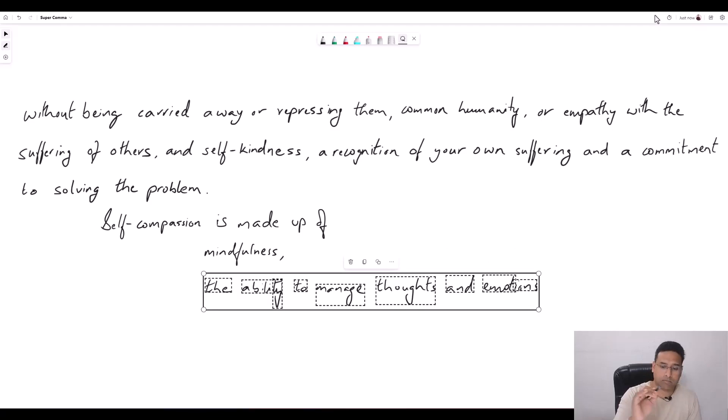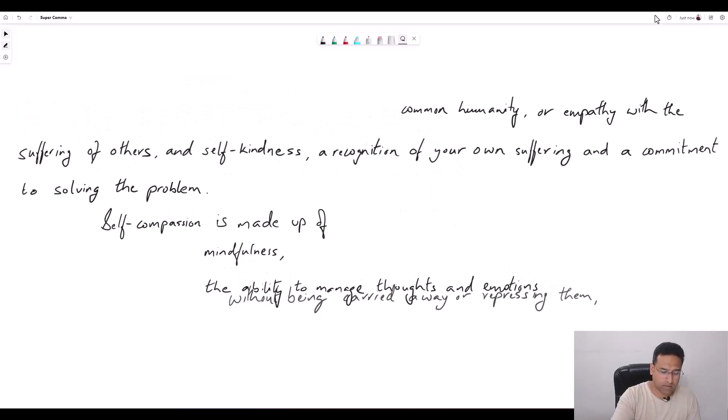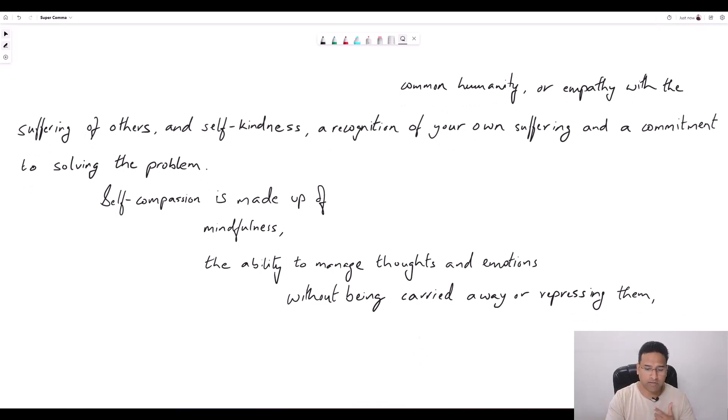Without being carried away or repressing them. Now, without being carried away or repressing them seems to be the modifier of managing thoughts and emotions without being carried away or repressing them. So this is just the continuation of the seemingly second entity. So without being carried away is modifying the ability to manage thoughts and emotions. But the question at hand is, is this entire thing, this ability, the second entity in the list that constitutes self-compassion? You must be asking yourself this question. And if it is, then why is it that this ability does not have a name? Whereas the preceding ability had a name, mindfulness. Hold on to that thought, while we bring in the other contenders.